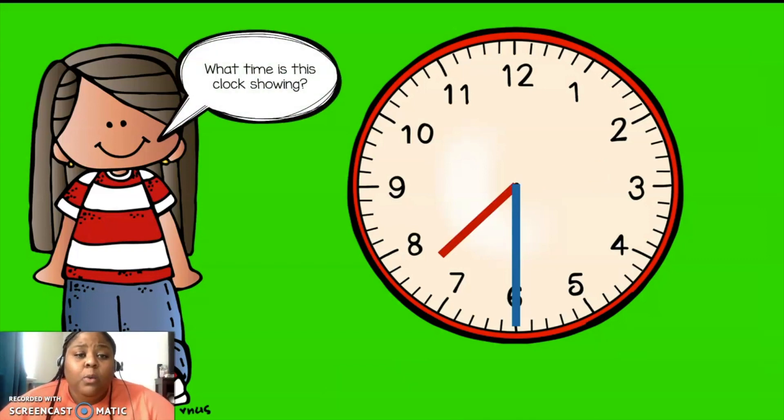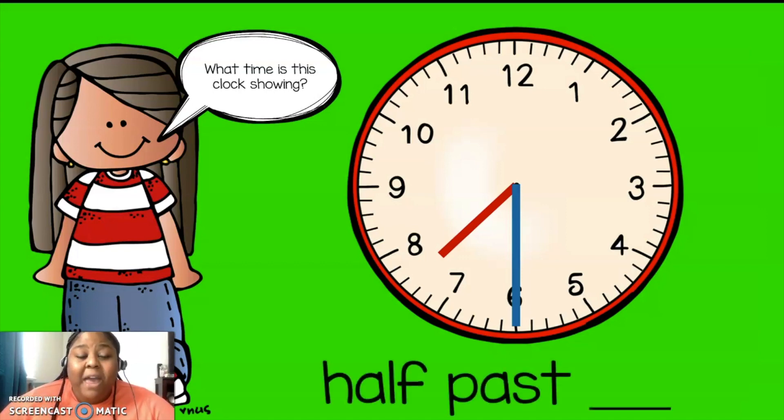Here's another one. What time is the clock showing? Look at the minute hand pointing to the six. That means it's half past. And that hour hand is in between two numbers. So it is half past what? Half past seven or half past eight? Let's think. All right, let's see. I think it's half past seven. If you said that, kiss those brains. Good job, kings and queens.